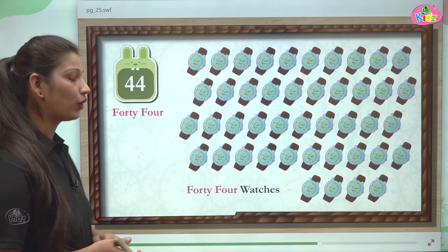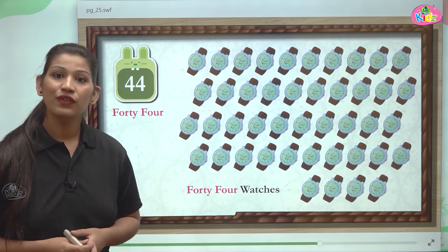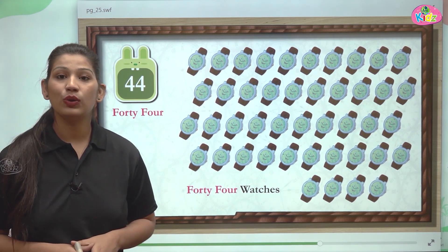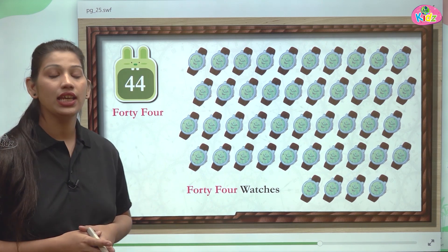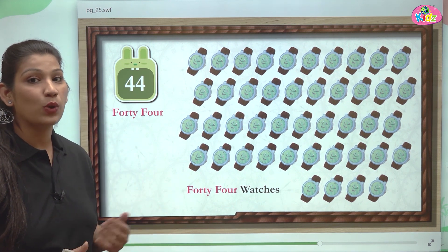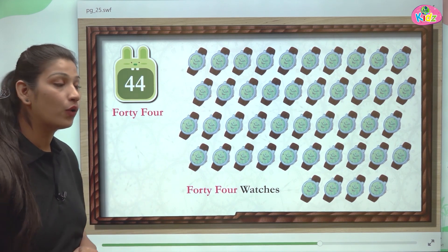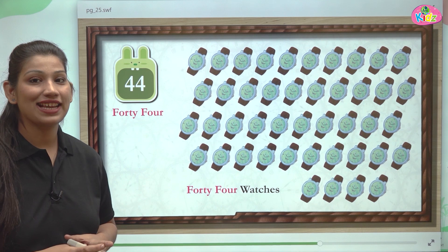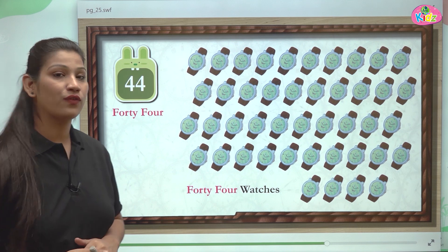After 43 there comes number 44. This is the number 44. F-O-R-T-Y is 40 and F-O-U-R is 4 — the number becomes 44. Here you can see watches. These watches are 44 in number. 44 is also called double 4, because isme 2 times 4 ka use hota hai. 4-4 is 44.